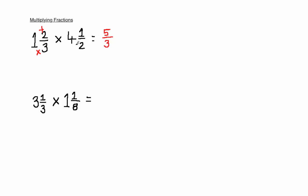In the second fraction, you multiply the whole number again at the front by the denominator to give you 8, and add the 1 to give you 9. The denominator remains the same, so it's 9 over 2. That's the first step.